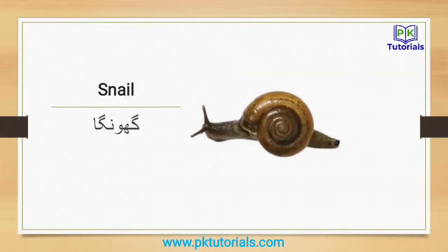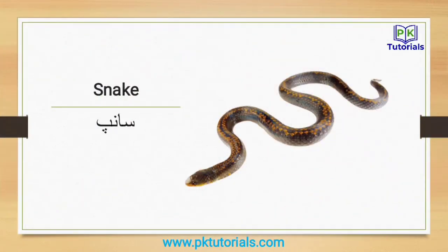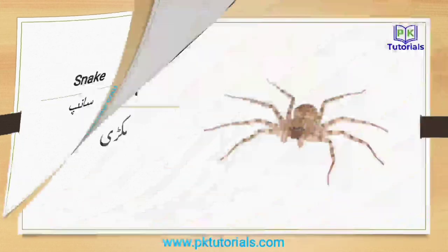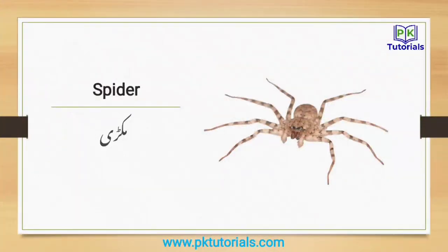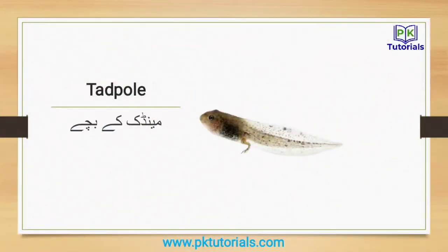Snail: gunga. Snake: saanp. Spider: makhri. Tadpole: mendak ke bacche.